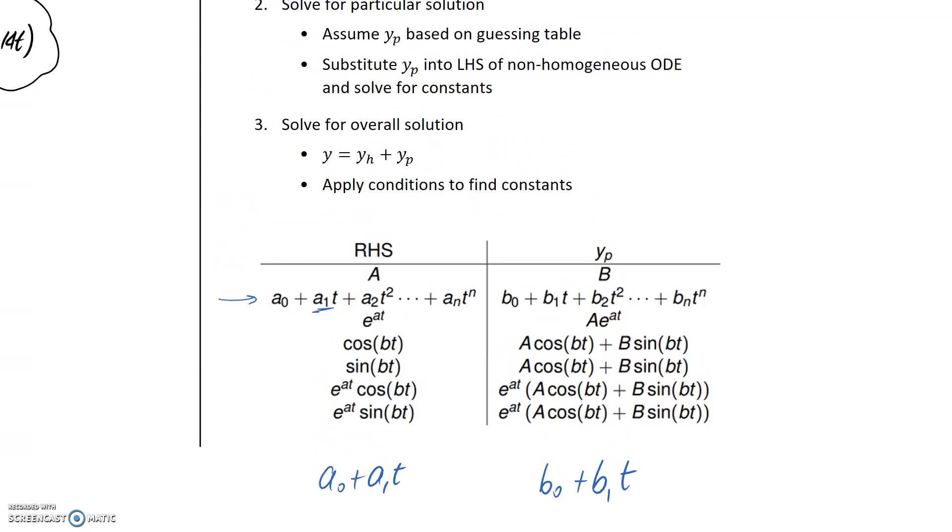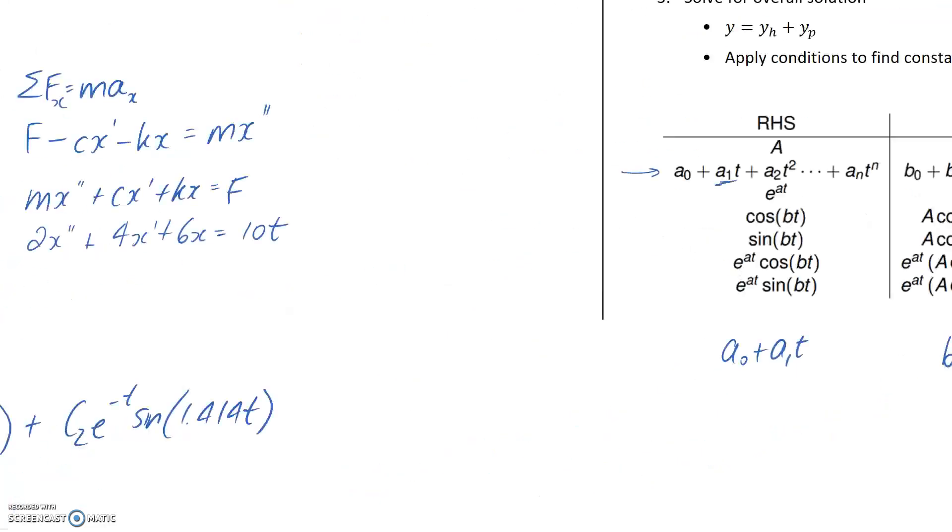So this is the particular solution that we're going to draw out. So we know that now we've guessed our yp, we can substitute it into the left hand side of our non-homogeneous ODE and solve for the constants. So the constants we need are b0 and b1. So let's go ahead and do that.